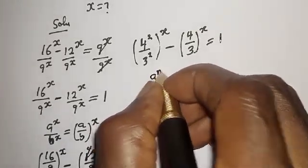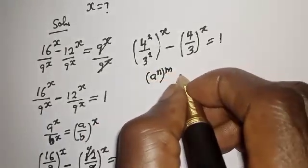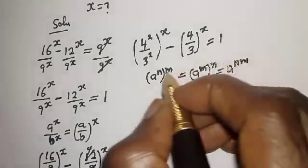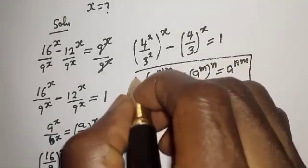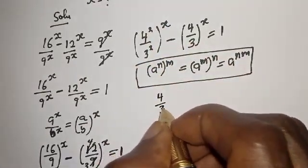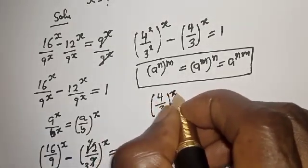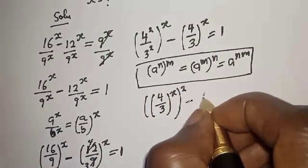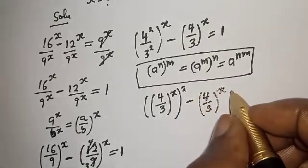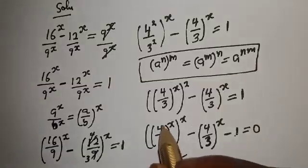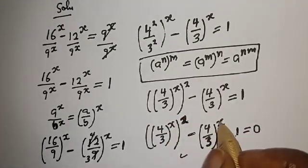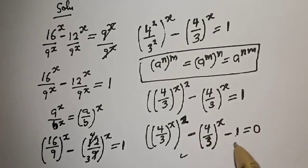Then if you have L raised to the power of N, to the power of M, this is equal to L raised to the power of M to the power of N, which is equal to L raised to the power of NM. We bring the S in — this can be written as 4 over 3 raised to the power of S, all squared, minus 4 over 3 raised to the power of S is equal to 1.